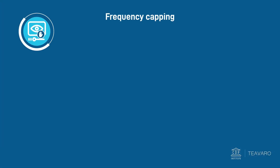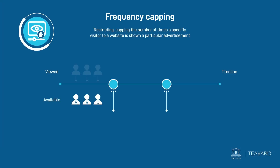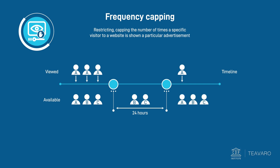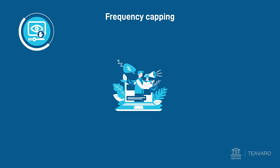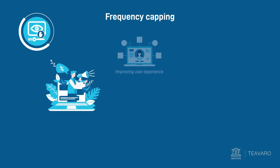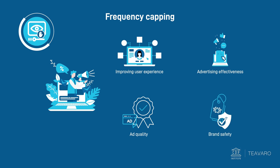Frequency capping is a term in advertising that means restricting or capping the number of times, or frequency, a specific visitor to a website is shown a particular advertisement. In this example, we have capped advertisement after the third impression within 24 hours. It's the most basic universal control for digital advertising, and it's essential to improving user experience, advertising effectiveness, ad quality, and brand safety.